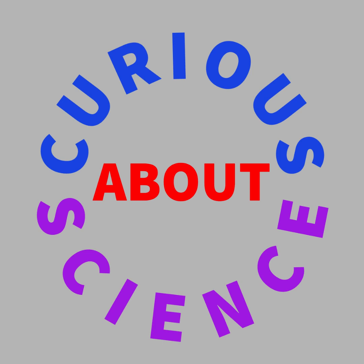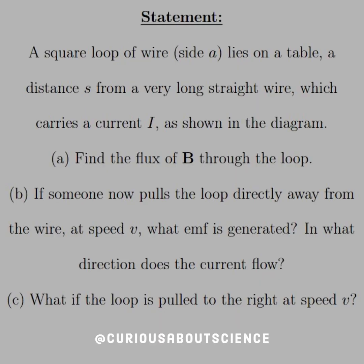Okay, here's another fun one using the flux rule. The statement reads, a square loop of wire, side A, lies on a table and is a distance S from a very long straight wire, which carries current I, as shown in the diagram. Alright, let's go check it out.